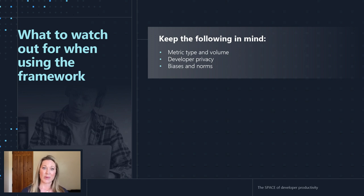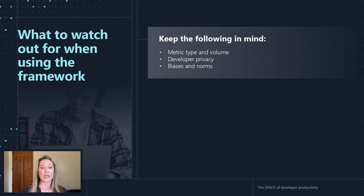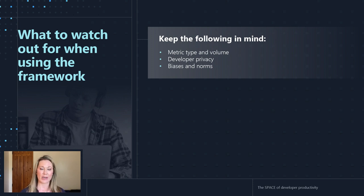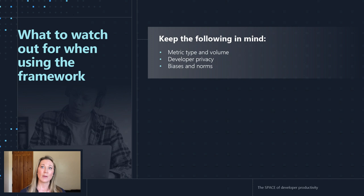Another factor to keep in mind is developer privacy. We should always respect privacy by reporting only anonymized, aggregated results at the team or group level. We should also consider how biases and norms might affect our data. Peer review and gender bias in particular are extremely common — research shows that women are more likely to receive negative comments and less likely to receive positive comments in code reviews. We should also be careful about the methods we use to normalize time, especially across long periods. Looking at metrics over a year would bias against developers who take time off for parental leave.